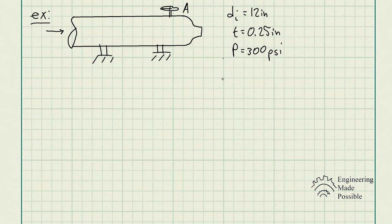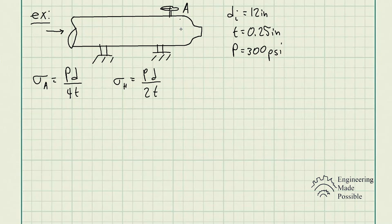In this case, we're asked for both the longitudinal or axial stress as well as the hoop stress. Let me go ahead and rewrite these equations here. Since in this case all you have is a cylindrical tank, those are the equations we're going to be using — the axial and hoop stress for a cylindrical tank. Since we have all the parameters needed, it's nothing more than plugging in each of the values and solving for your axial and hoop stress accordingly.